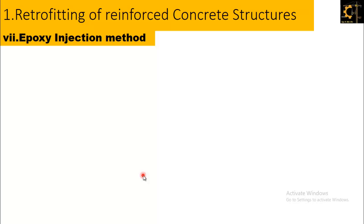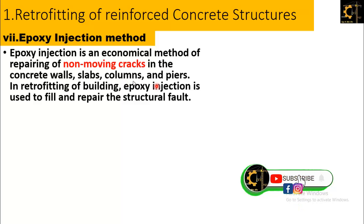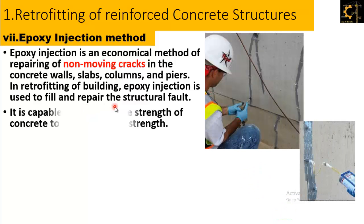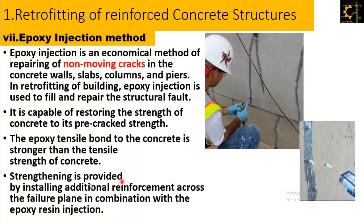The seventh technique of retrofitting is the epoxy injection method. Epoxy injection is an economical method of repairing non-moving cracks in concrete walls, slabs, columns, and piers. It is used to fill and repair structural faults and is capable of restoring the strength of concrete to its pre-cracked strength. The epoxy tensile bond to the concrete is stronger than the tensile strength of the concrete itself. Strengthening is provided by installing additional reinforcement across the failure plane in combination with epoxy resin injections.